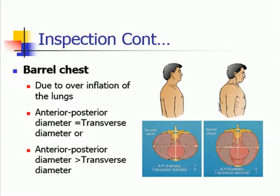Barrel chest is due to overinflation of the lungs. The antero-posterior diameter in barrel chest is equal to or may be greater than the transverse diameter. This type of chest is most commonly observed in chronic obstructive pulmonary disease patients.